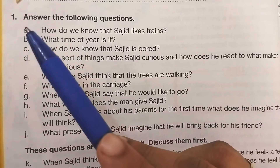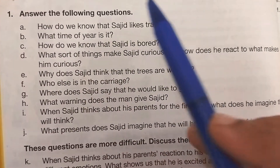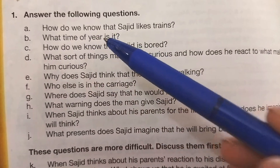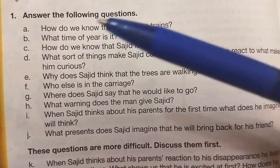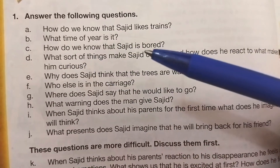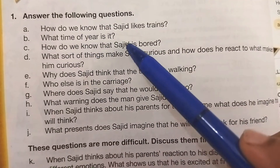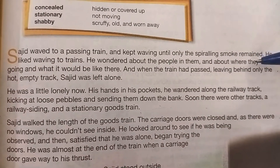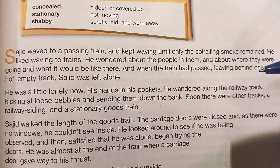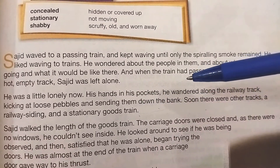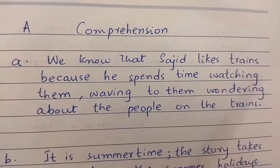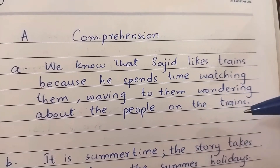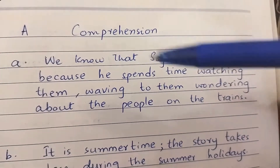Part A of question number one says: 'How do we know that Sajid likes trains?' This answer is given in the very beginning, but we have to write the answer in the same pattern it has been asked. We know that Sajid likes trains because he spends time watching them, waving to them, and wondering about the people on the trains.